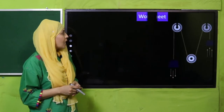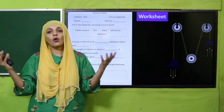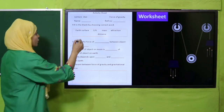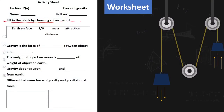For practice, you can download this worksheet from the description box below this video, or get it in print form from your teacher. Write down your name and roll number and start doing the worksheet. Fill in the blanks: Gravity is the force of attraction between the object and the earth's surface. The weight of the object on the moon is one-sixth of the weight on earth. Gravity depends upon mass and distance from the earth.